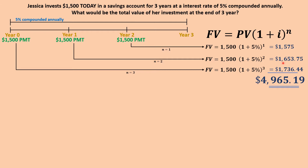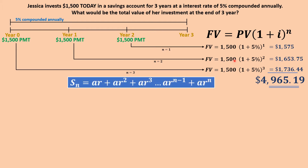This is the answer, but the approach is very tedious. If Jessica was investing for the next 18 years, the calculation would be very long and the chances of making an error are high. What we can do is simplify this into one equation. We can see a common term and a common ratio, so we'll use the geometric series equation to generate a formula for annuity due.